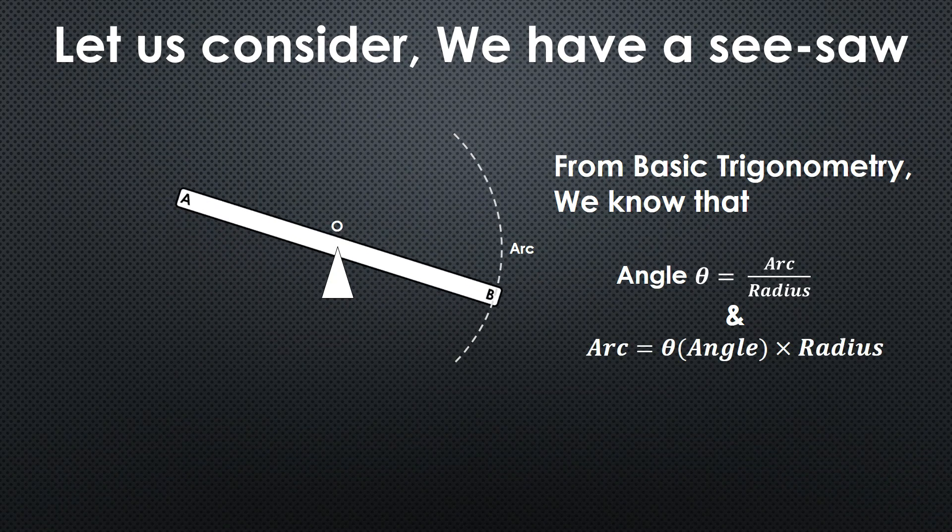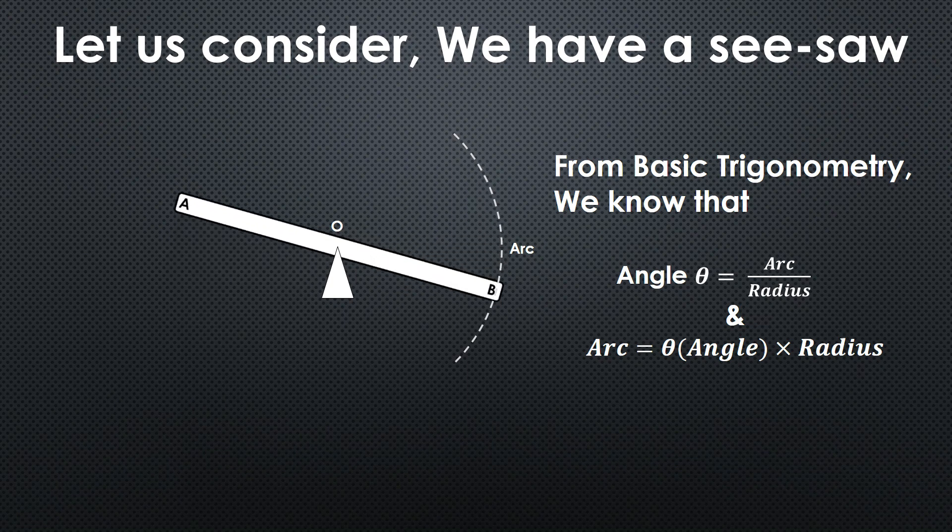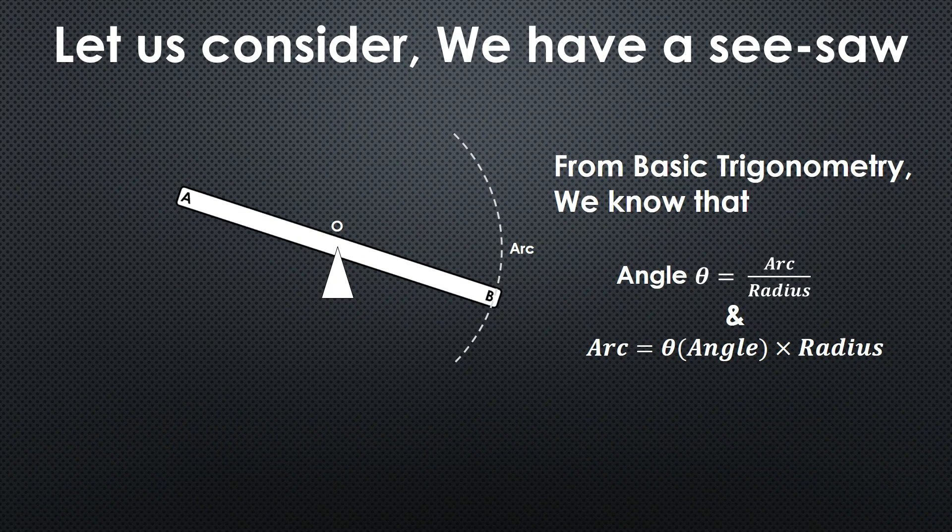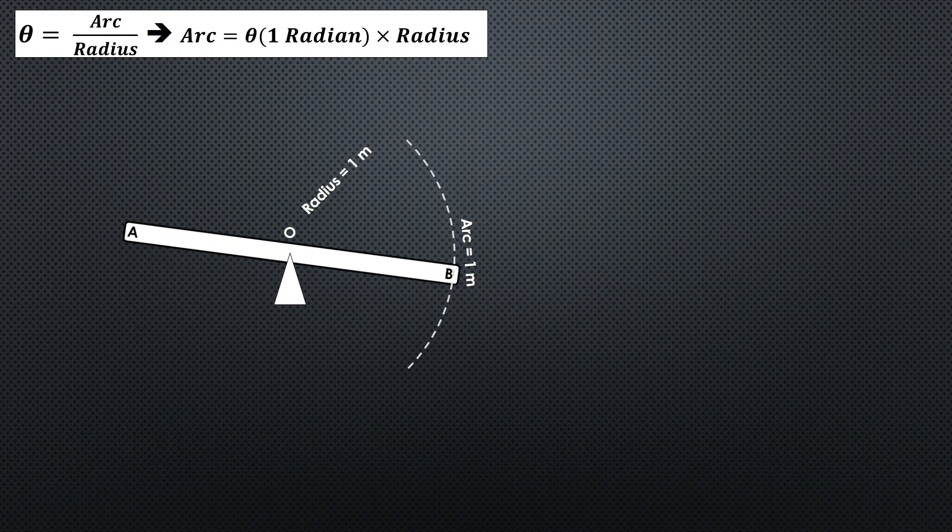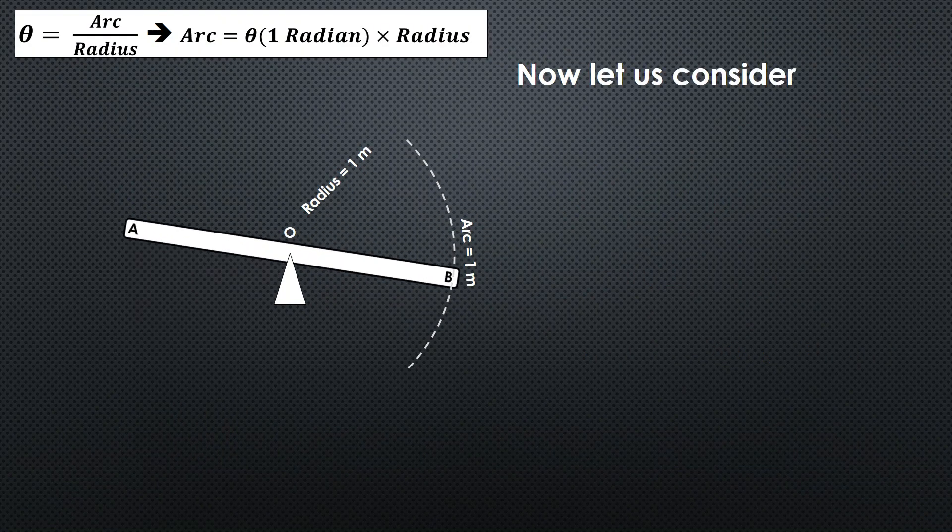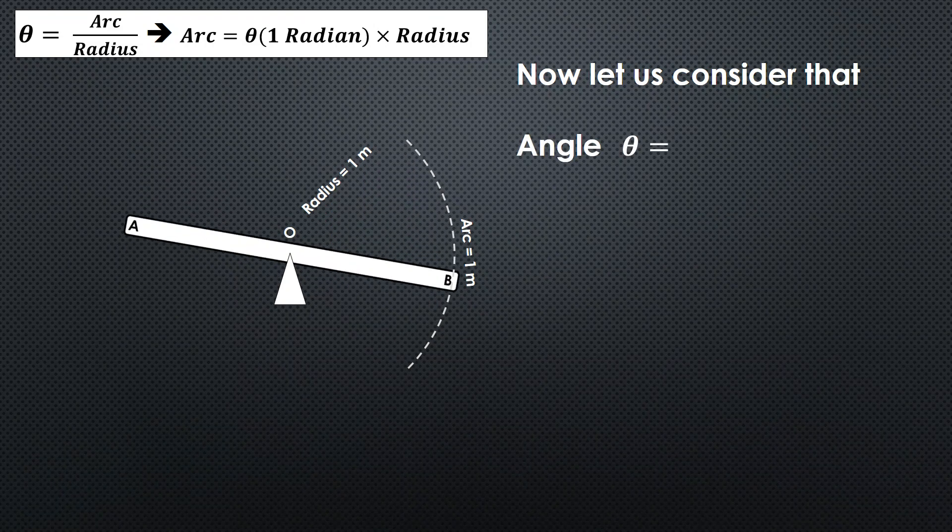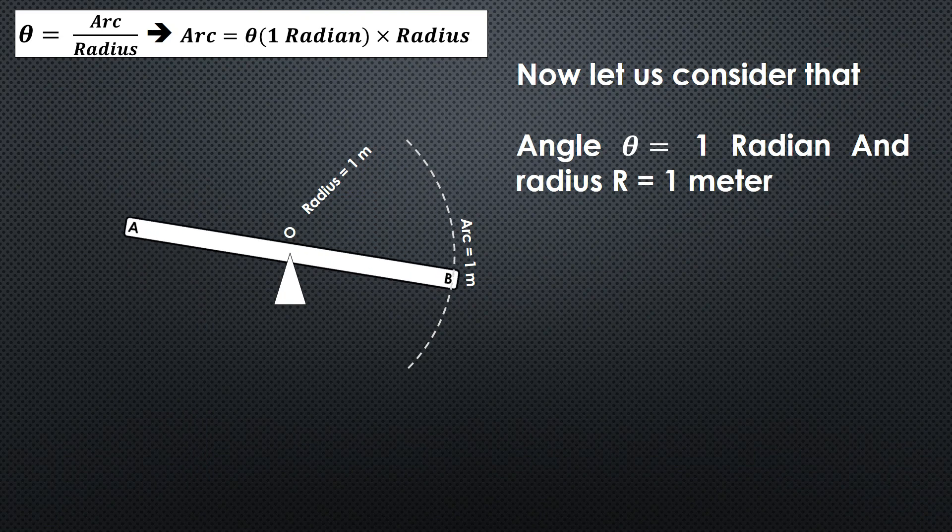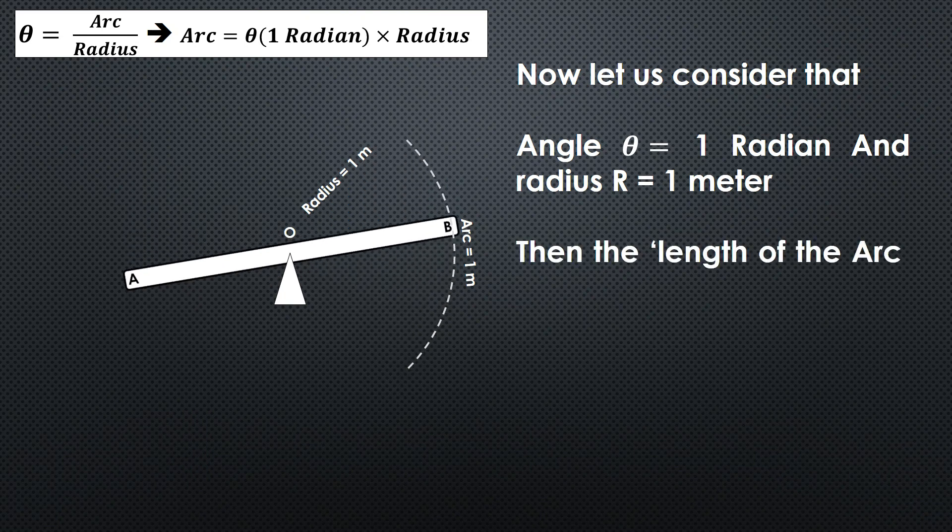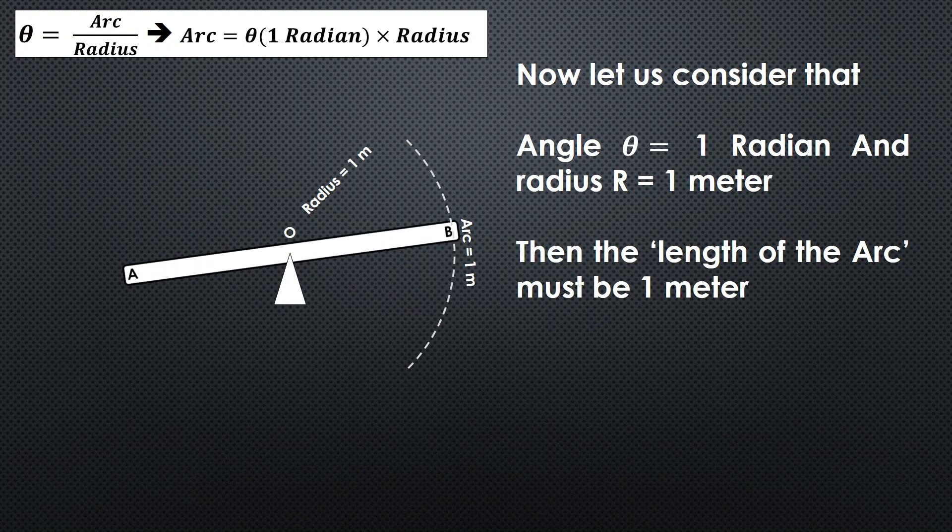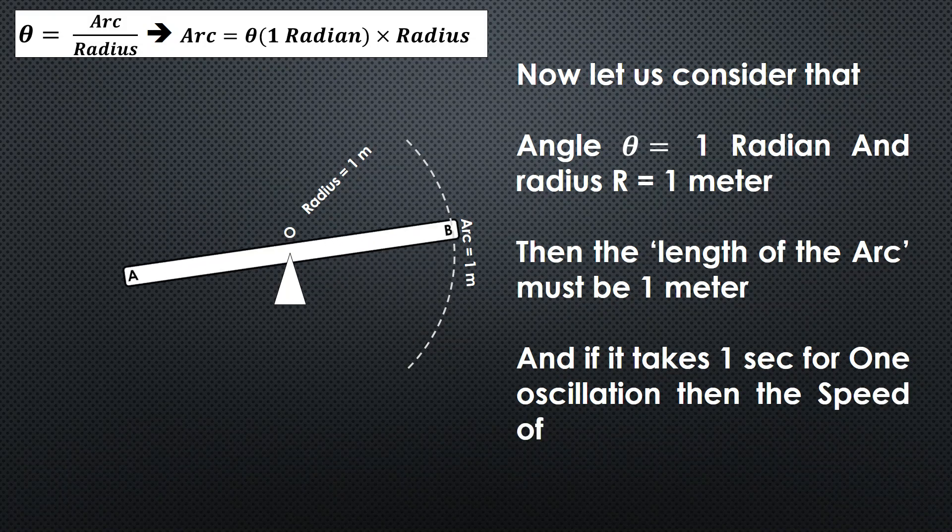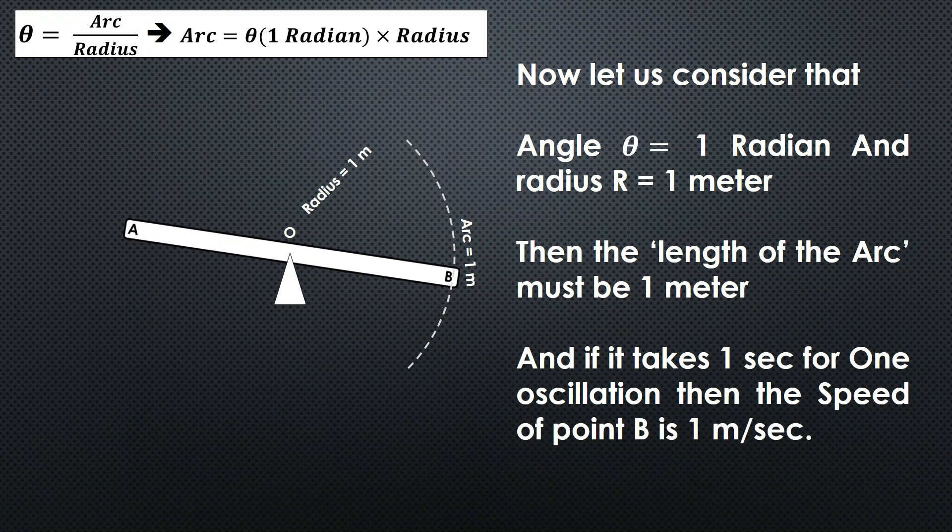So we can understand that arc is equal to theta times radius. Now let us consider that theta is equal to 1 radian and the radius is 1 meter. Then the length of the arc will also be 1 meter. And if we consider that this oscillation is taking 1 second, in that case the velocity of point B is 1 meter per second.